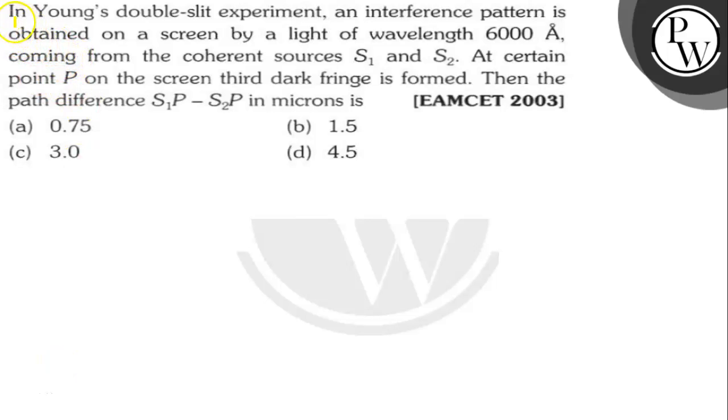Hello Achoo. Let's read the question. The question says here, in Young's double slit experiment an interference pattern is obtained on a screen by a light of wavelength 6000 Angstrom coming from the coherent sources S1 and S2.